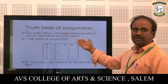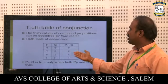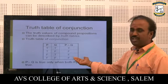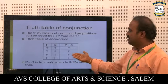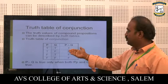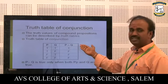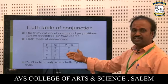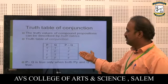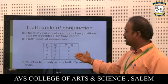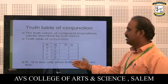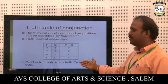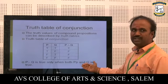Truth table for conjunction: The truth table for the compound proposition P and Q is as follows. True and True gives True. True and False gives False. False and True gives False. False and False gives False. The result P and Q is true only when both P and Q are true.